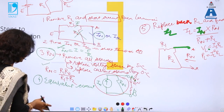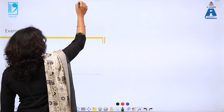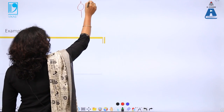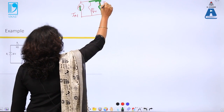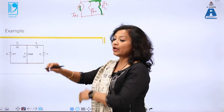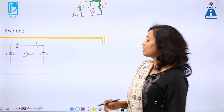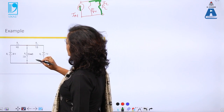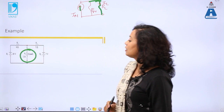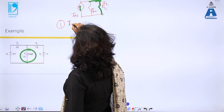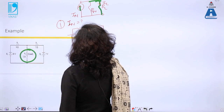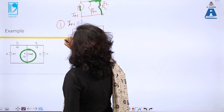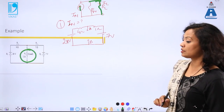In Norton's theorem, we draw the equivalent circuit with I_Norton and R_Norton and replace back R_L to find current I_L. Now, taking an example for Norton's theorem — using the same circuit as in Thevenin's theorem — let the load resistance be R2, and I need to find the current in R2. The first step is to find I_Norton: I remove R2, place a short circuit across terminals A and B, and find I_Norton in the short circuit.